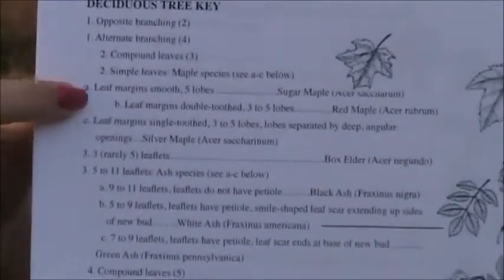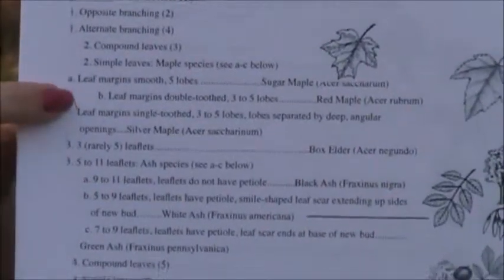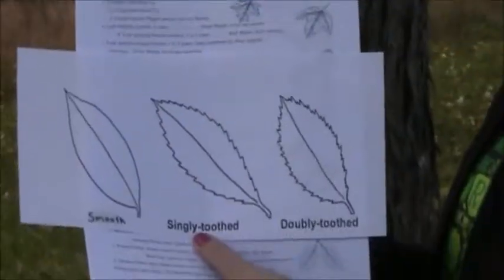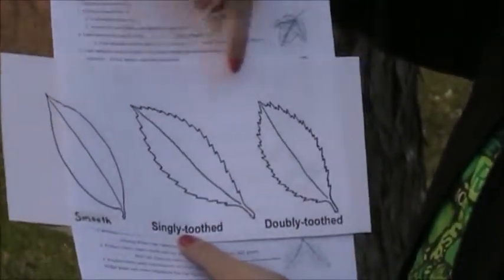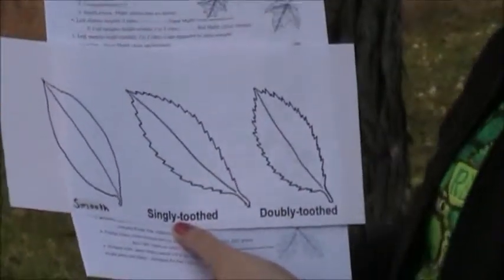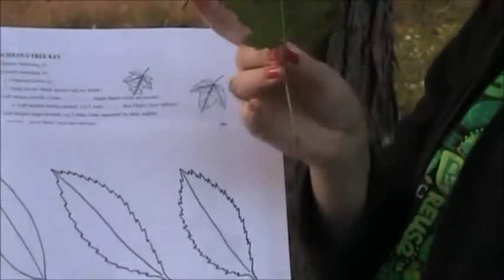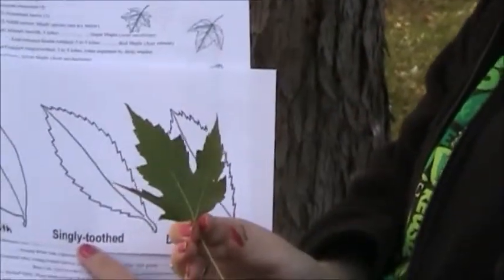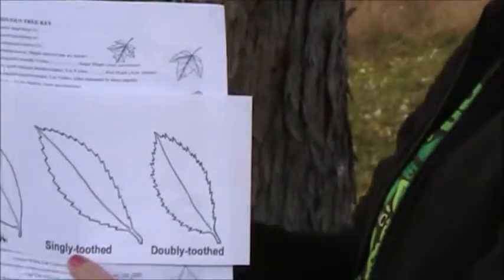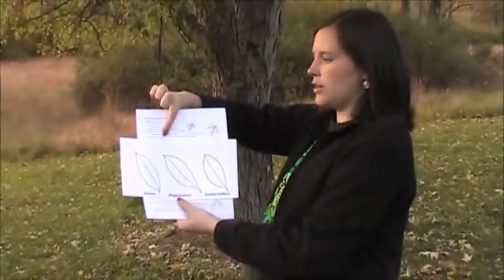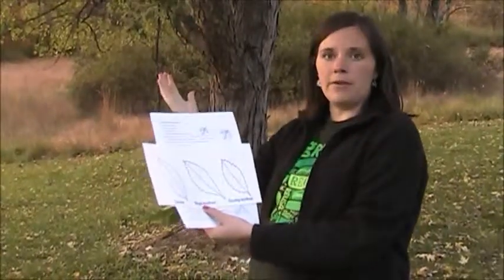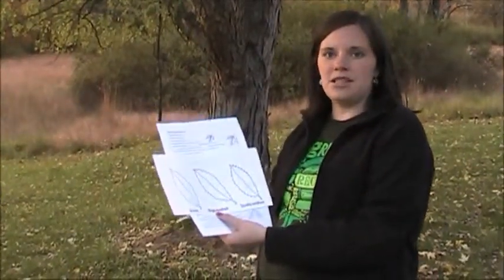Next, A through C, I must decide what the leaf margin is. Leaf margin refers to the edge of the leaf. The leaf margin can be smooth, singly tooth, or doubly tooth. When looking at my leaf, it is single tooth. When I refer to my dichotomous key, it tells me that a single tooth leaf margin is a silver maple. So I am standing here by a silver maple tree.